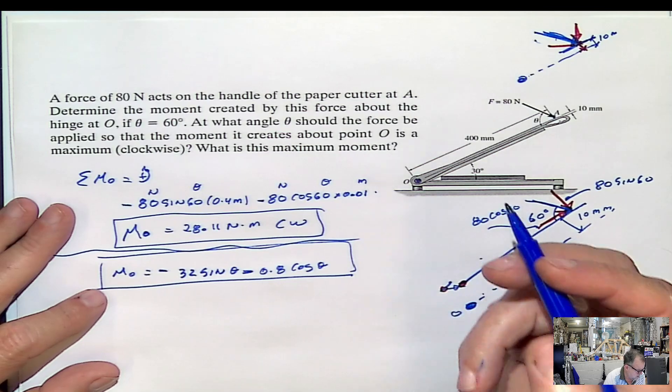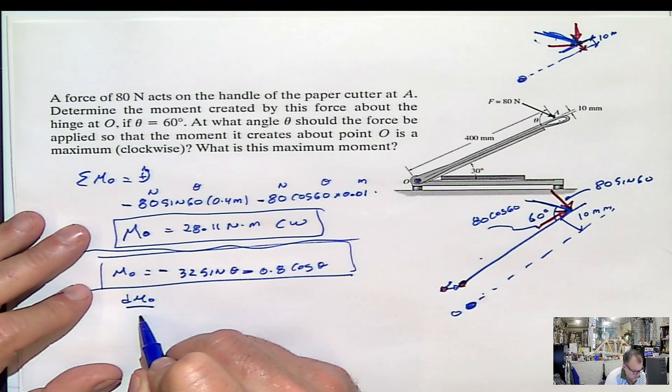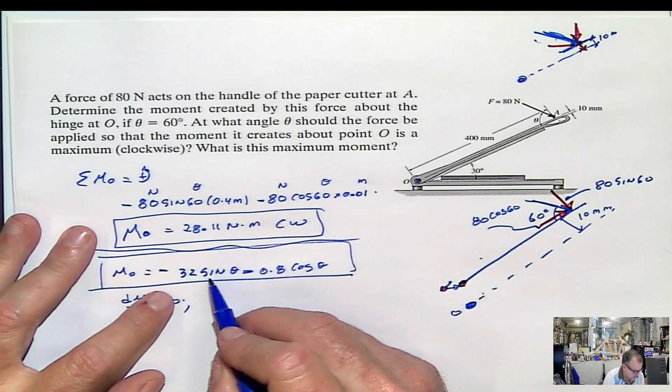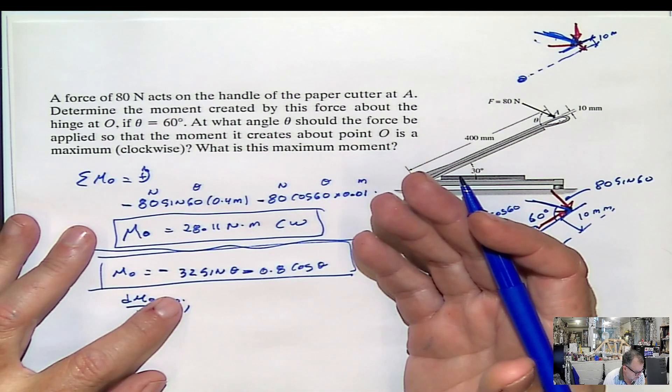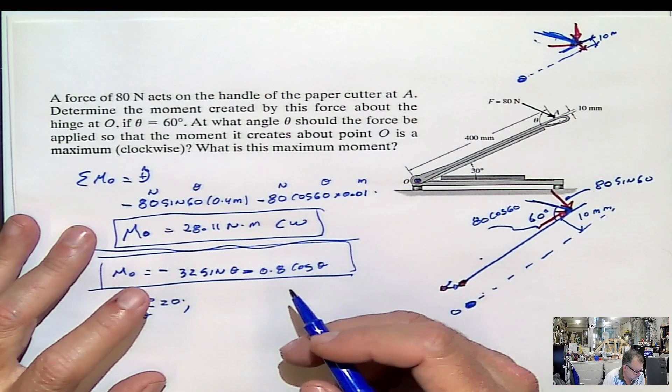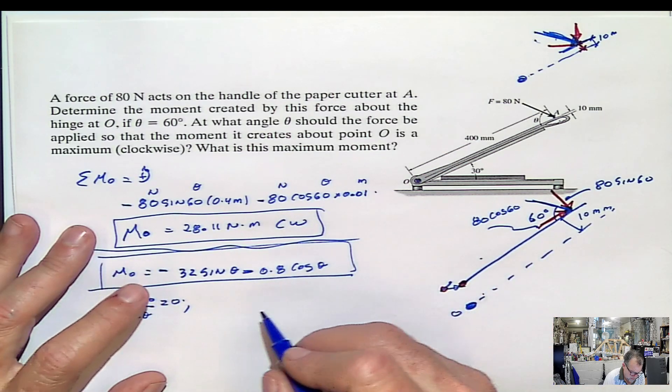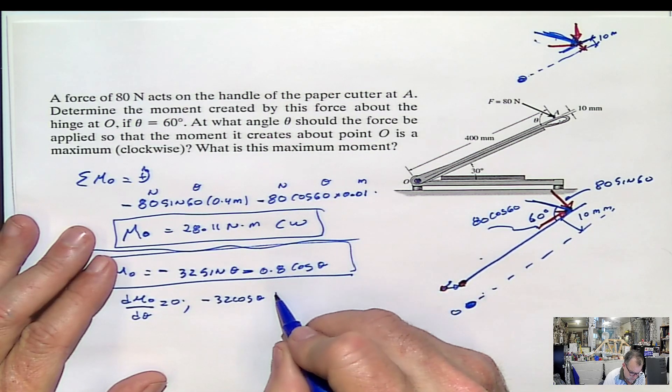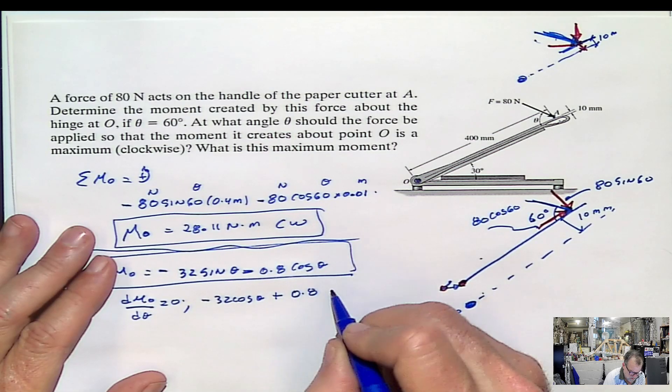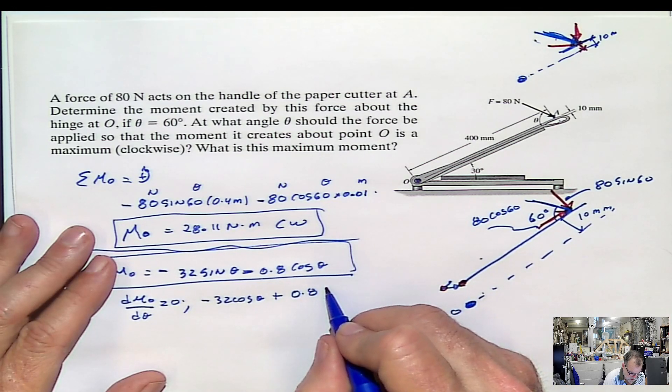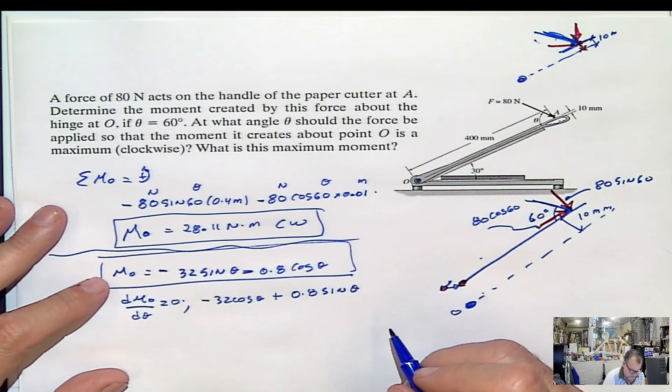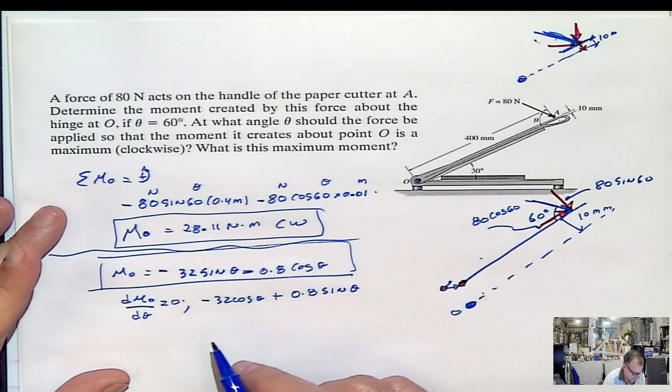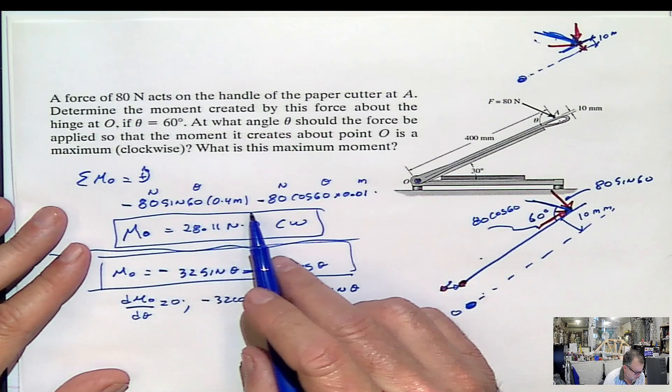Now, we are looking for a maximum value. And how do you find maximum value? You take the first derivative of the moment with respect to the angle in this case and make it 0. So the first derivative of the moment will be what? This is going to be, the derivative of the sine will be cosine. Let me see something up here. No, it's OK. This is cosine. Cosine. So that would be negative 32 cosine theta. Cosine is sine, plus 0.8, minus times minus is plus. So it's going to be sine theta. That would be the value.